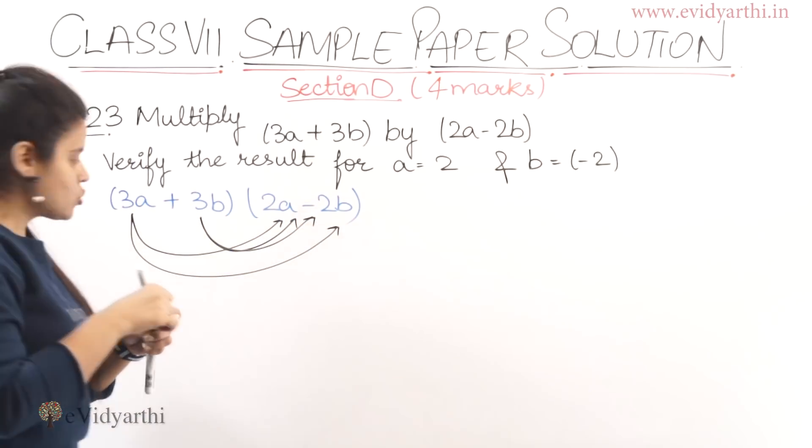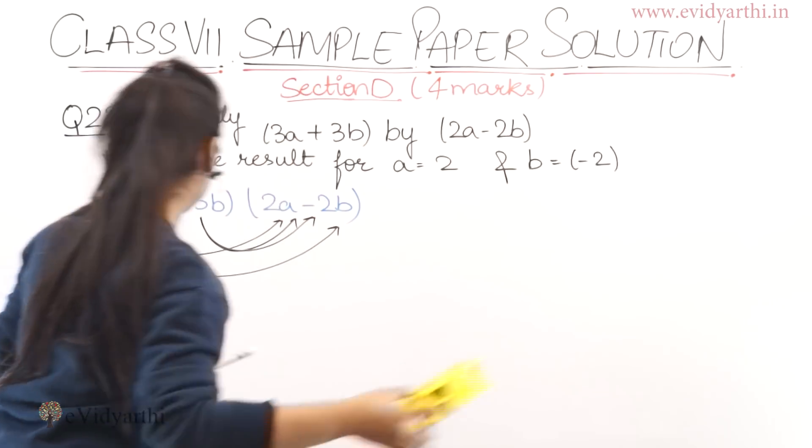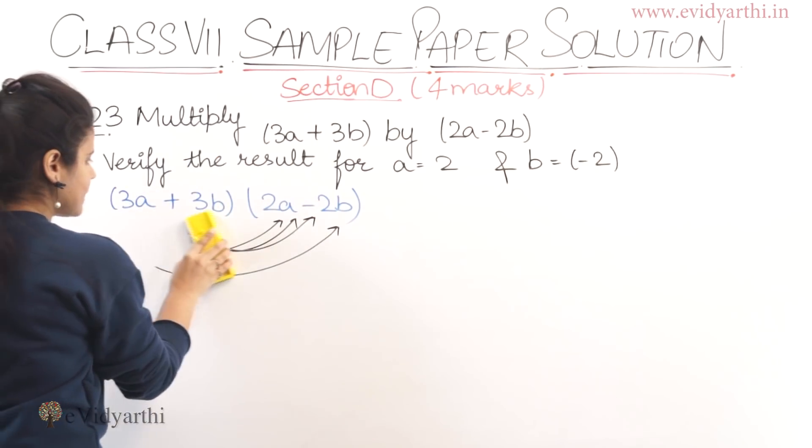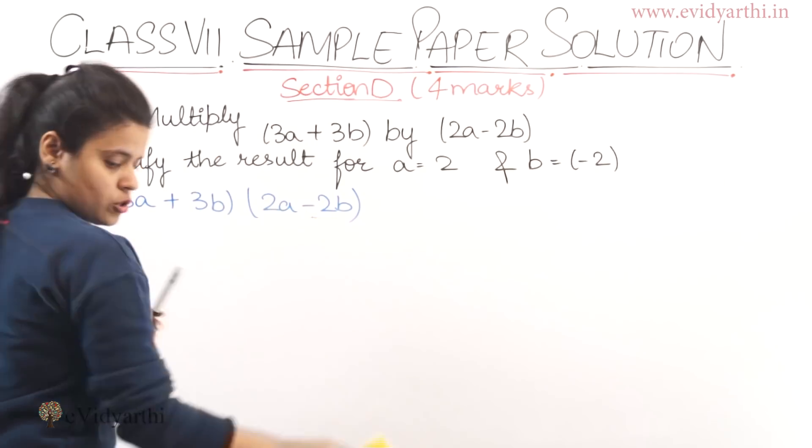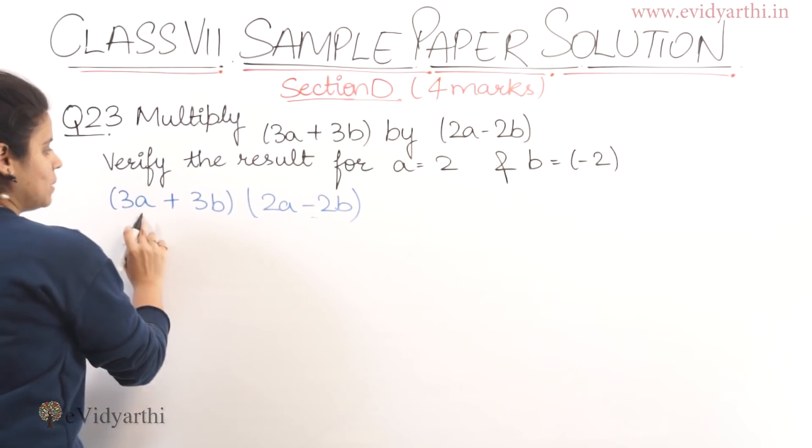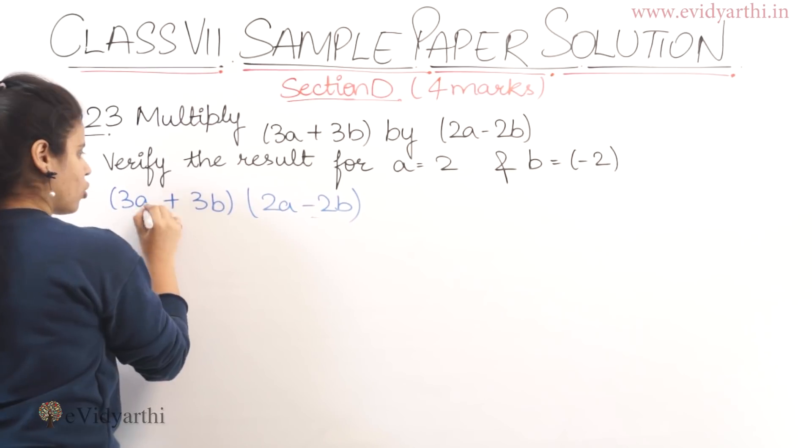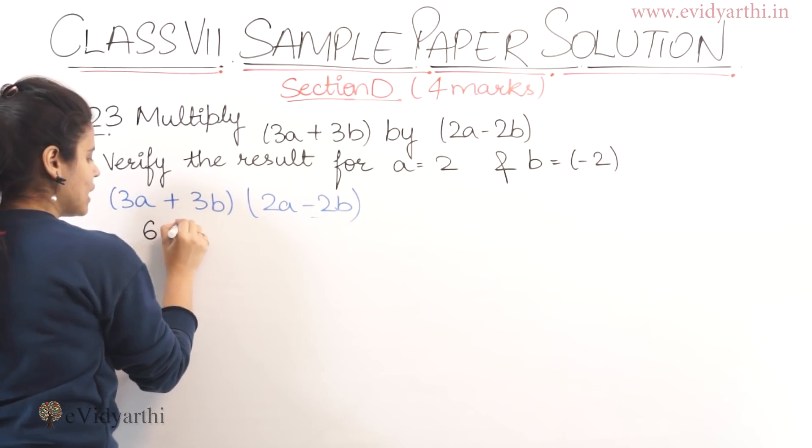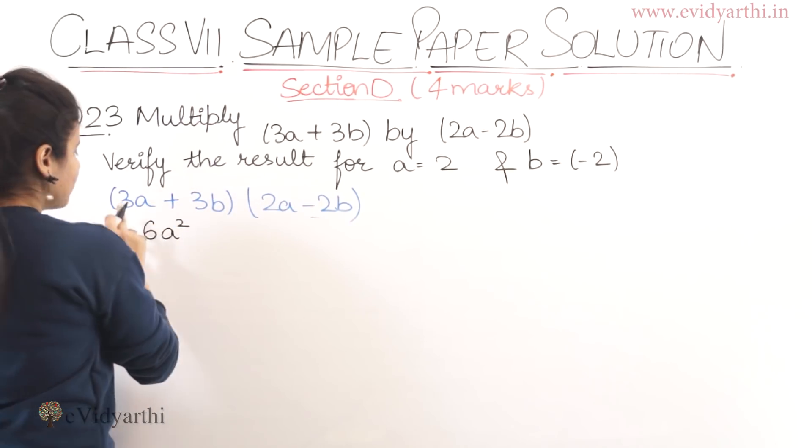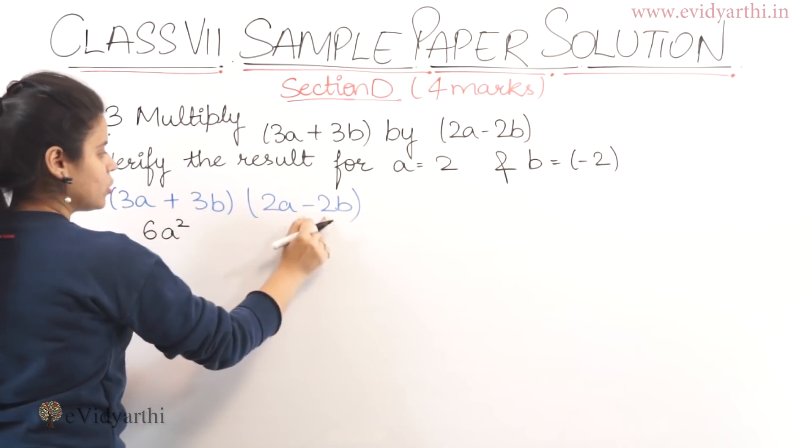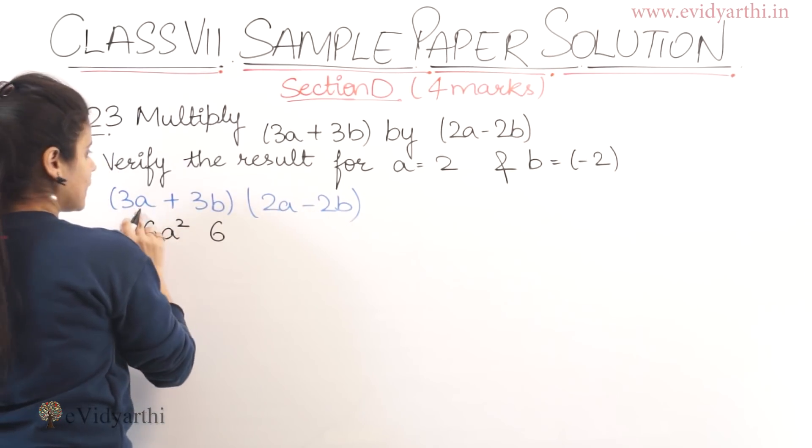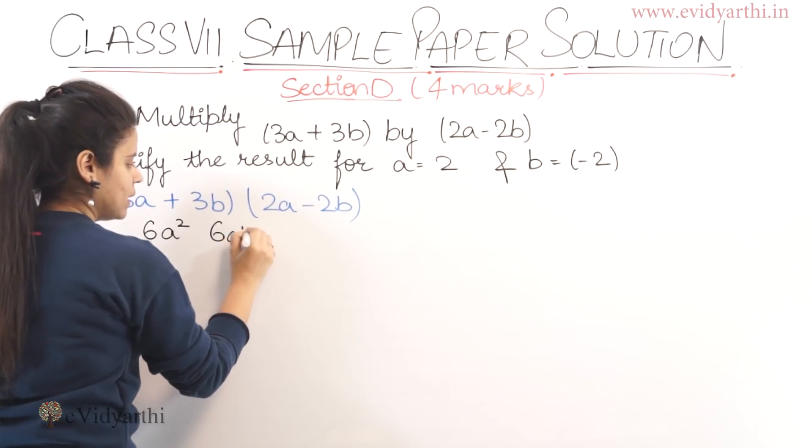Let's begin. First of all we have to do 3a. So we multiply 3a by 2a. 3 into 2 is 6 and a into a will be a square. Then 3a multiply 2b. So 3 into 2 is 6ab.